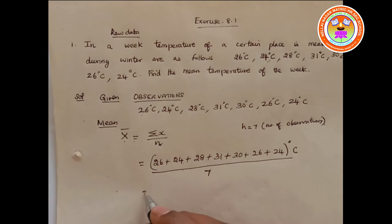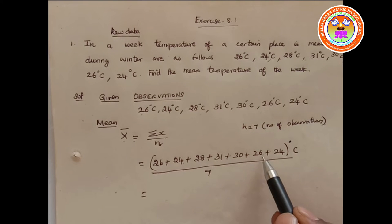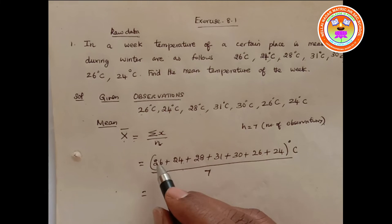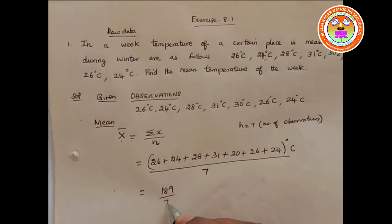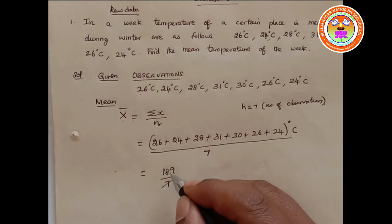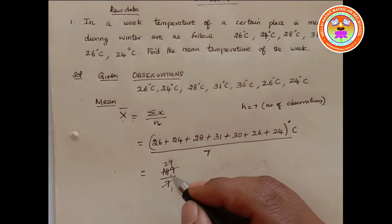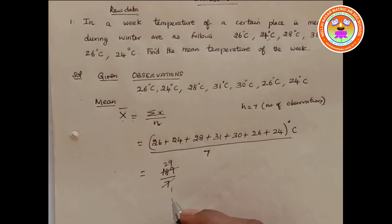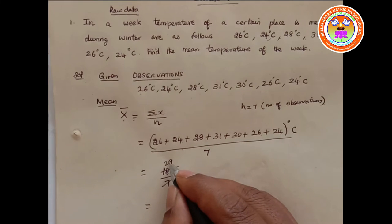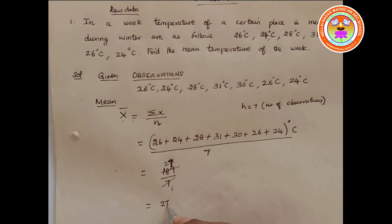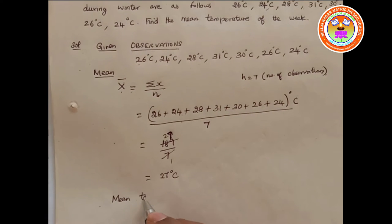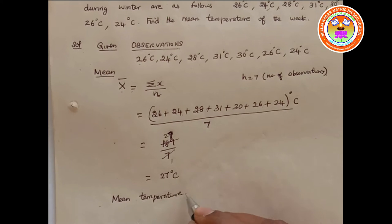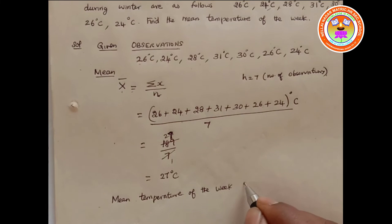When you add: 26 + 24 + 28 + 31 + 30 + 26 + 24 = 189. So x̄ = 189 / 7 = 27. Therefore the mean temperature of the week is 27 degrees Celsius.